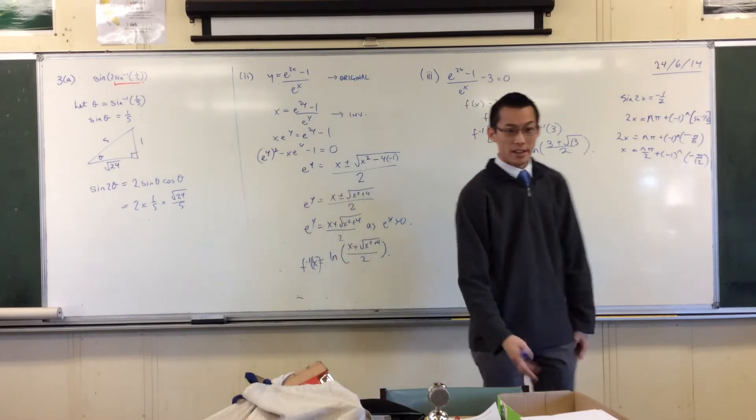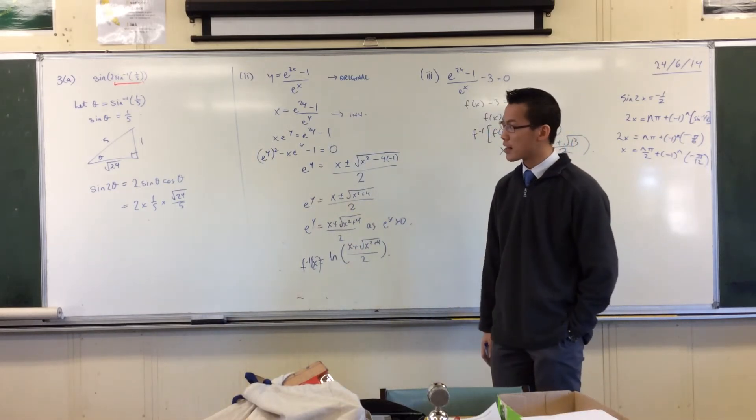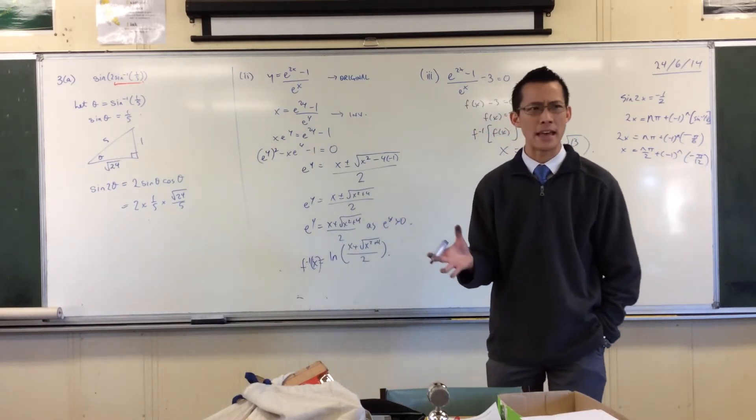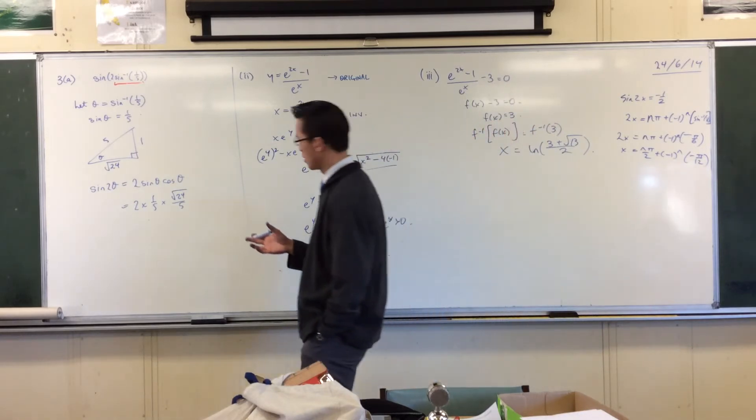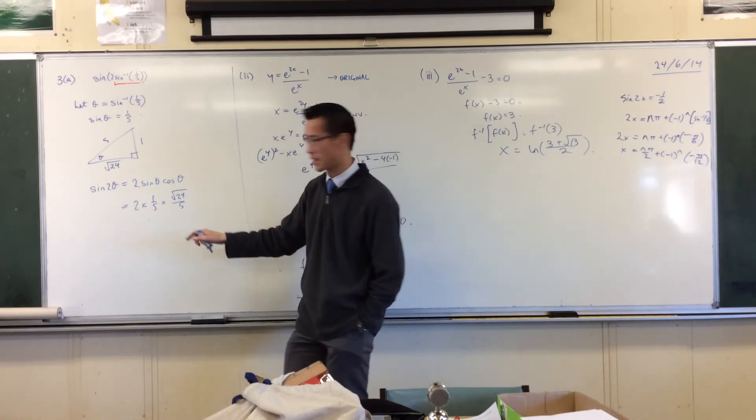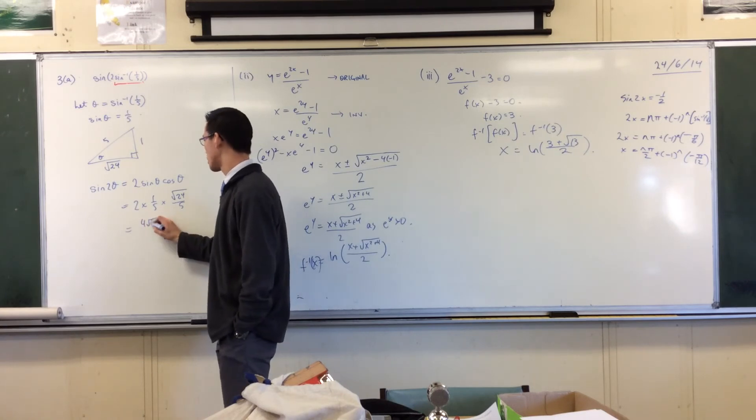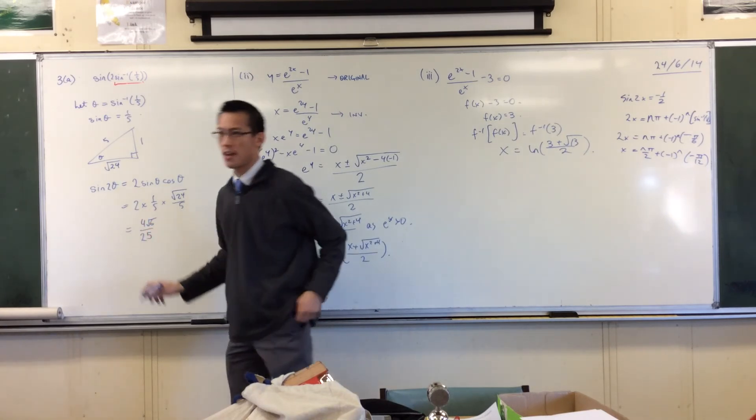Yeah, that's right. Now I just need to tidy up. That's square root of 24. I can simplify that, can't I? What would I make that? So you've got a factor of four. That's two root six, I think. So you're going to get four root six on 25, and you're home.